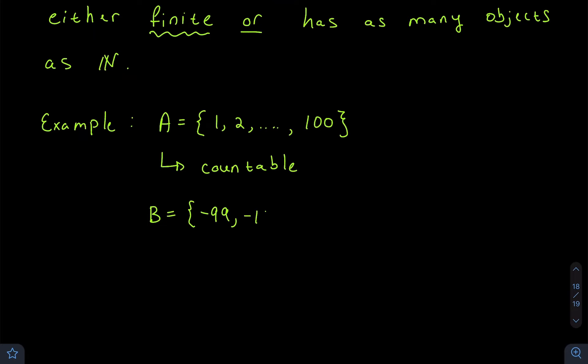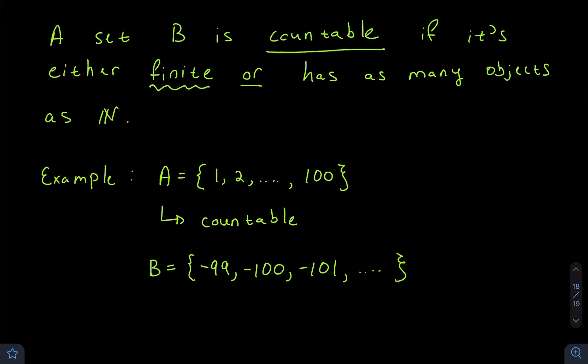But so is this set B = {-99, -100, -101, ...}. We go on infinitely, subtracting one from each preceding number. This set is not finite; however, it will have as many objects as the set of natural numbers.